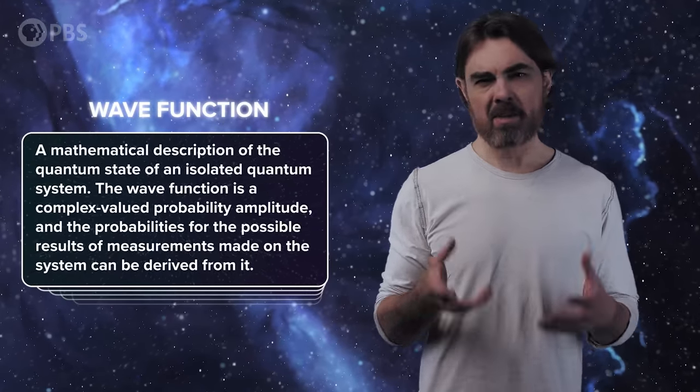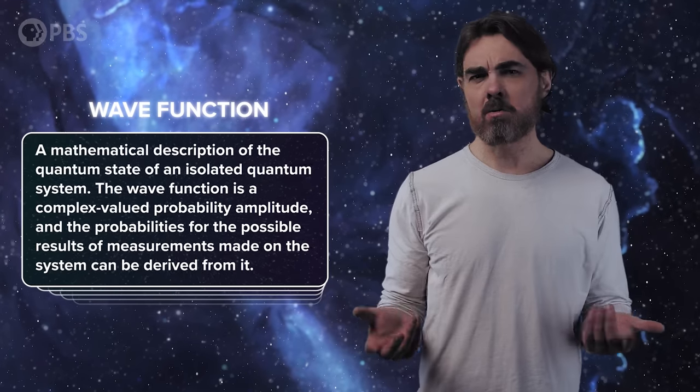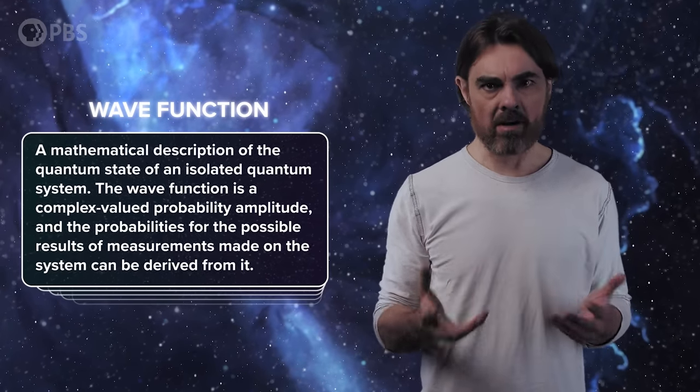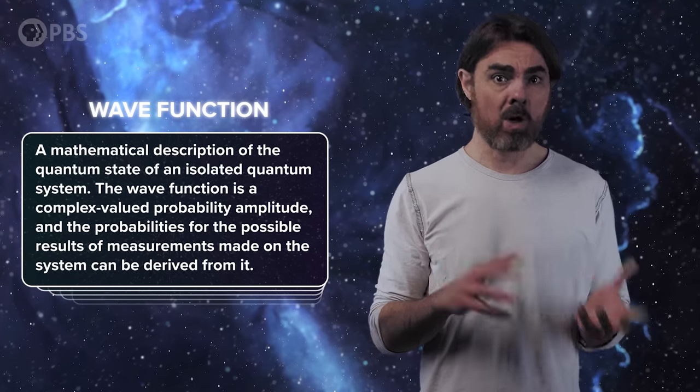In quantum mechanics, we describe particles as wavefunctions. These are mathematical objects that encode the probability that we will observe a certain position, velocity, whatever, if we were to try to measure it. Wavefunctions are well-named because they're wavy. For simplicity, let's just look at one component of a particle's position wavefunction,